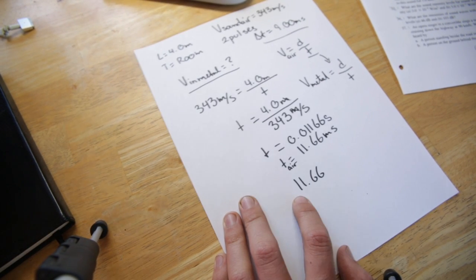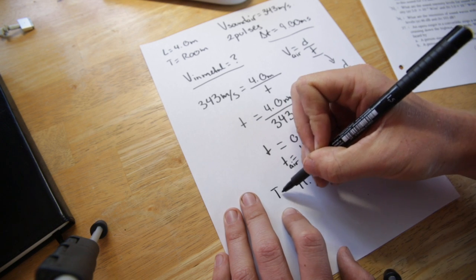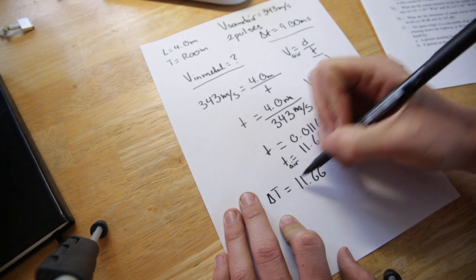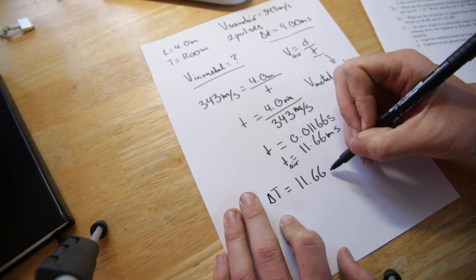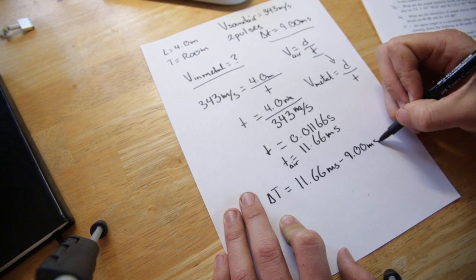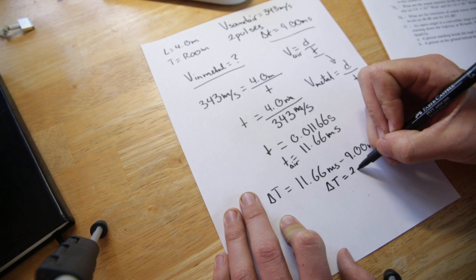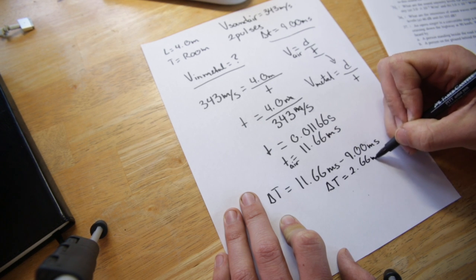So now that we have calculated the time spent in the air we can use our given value to calculate delta t between the two waves. So that is 11.66 milliseconds minus 9.00 milliseconds. And delta t is going to be 2.66 milliseconds.